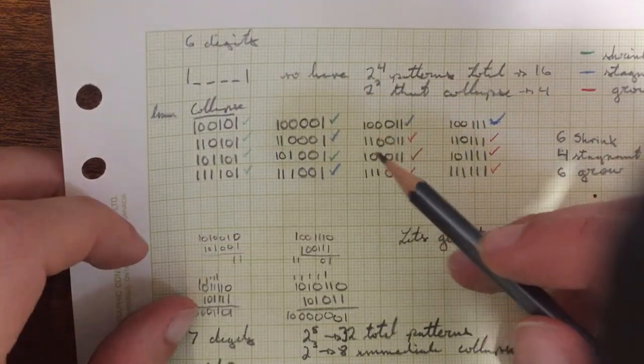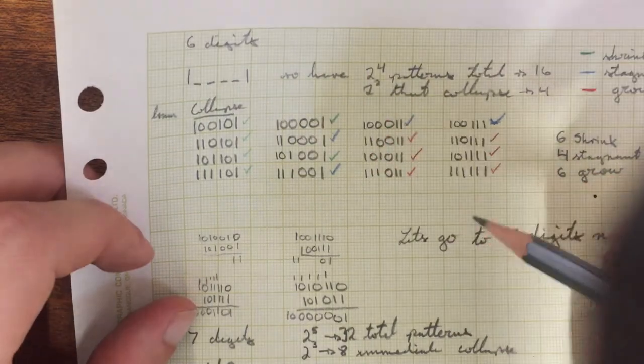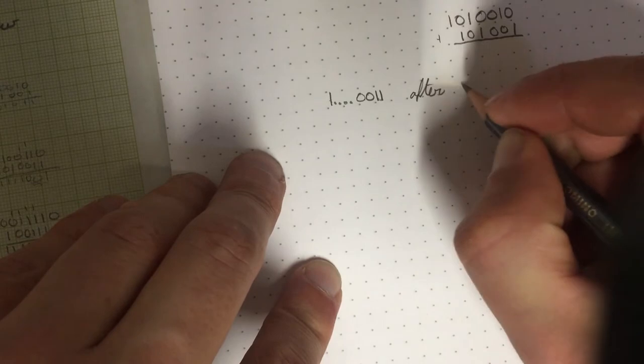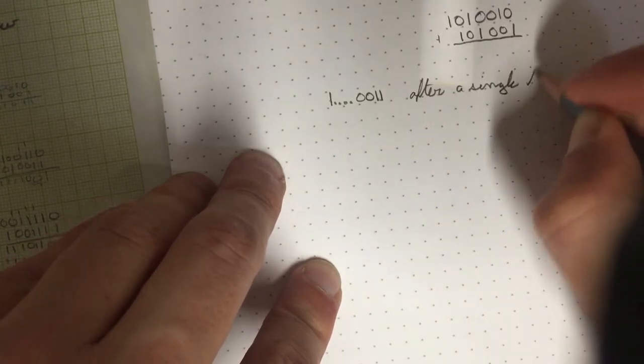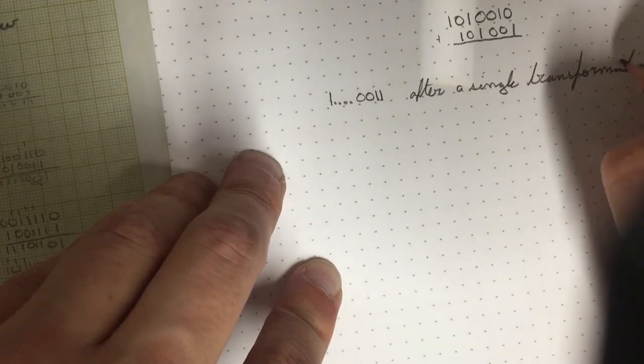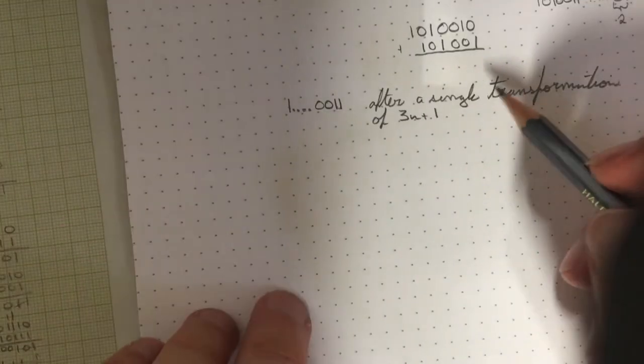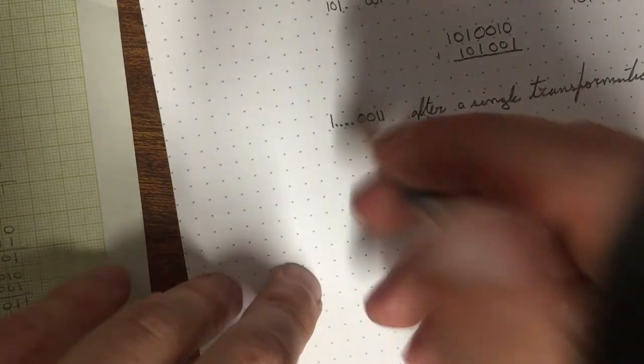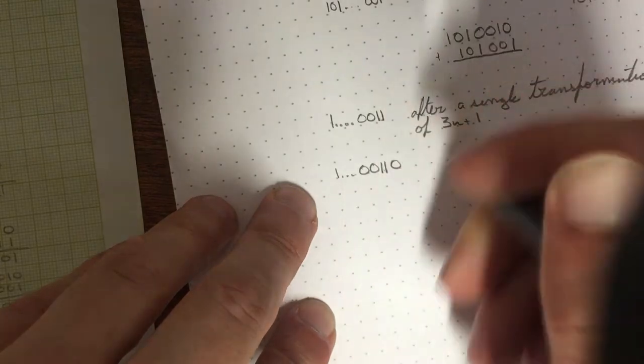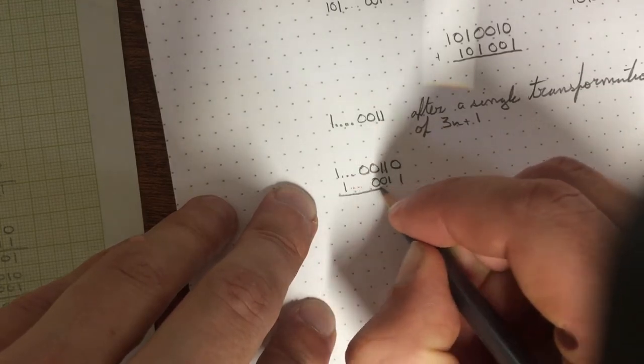For these two, we're sort of curious. Can we build a general rule for any of these that after a single transformation of 3n plus one? What happens to these?